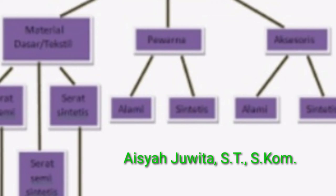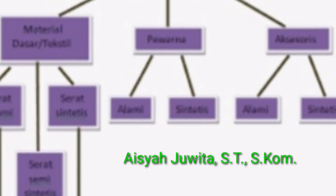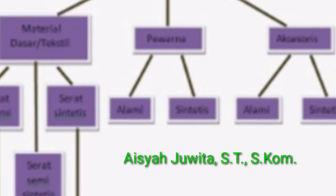Serat bahan sintetis berasal dari polister, serupa dengan plastik, yaitu nilon, akrilik, spandek, dan lain-lainnya. Serat sintetis memiliki elastisitas yang baik sehingga tidak mudah kusut dan tidak memerlukan penyetrikaan panas, namun daya serapnya rendah sehingga kurang nyaman dan kurang terasa sejuk pada tubuh. Tekstil dari serat sintetis tahan terhadap bakteri dan jamur, serta tahan terhadap pelarut organik dan kimia atau dry cleaning.